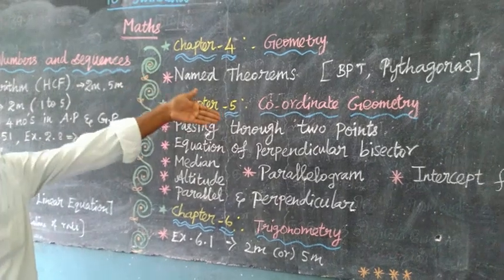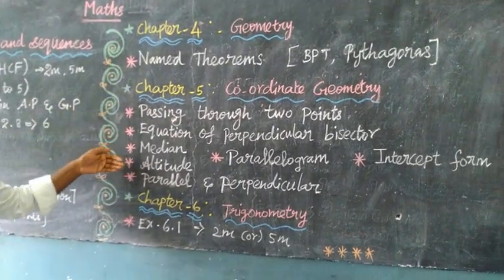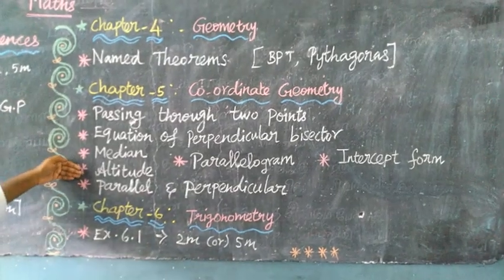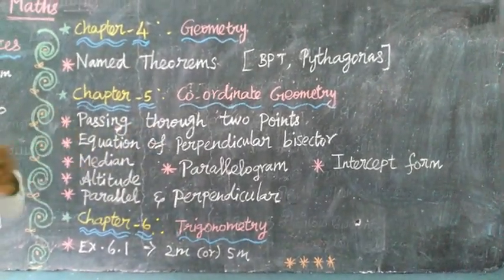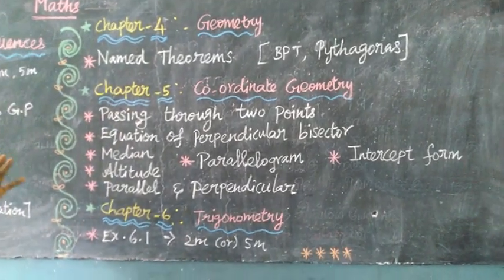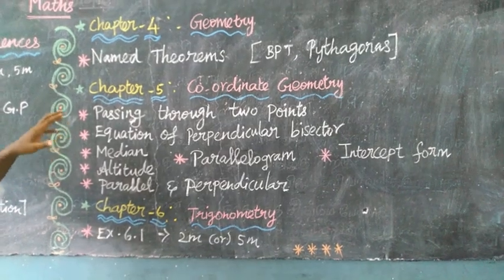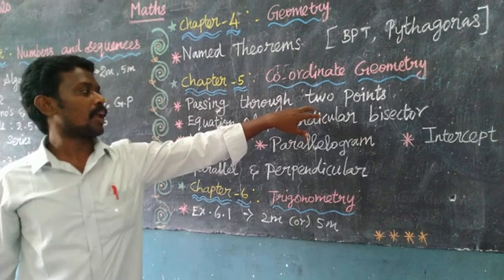Chapter 5: Coordinate Geometry, most important area. The equation of line passing through two points, intersection of line. Through the line, there are many models.